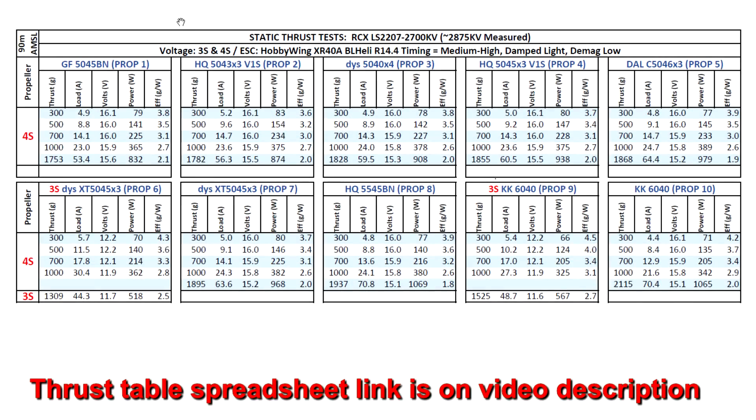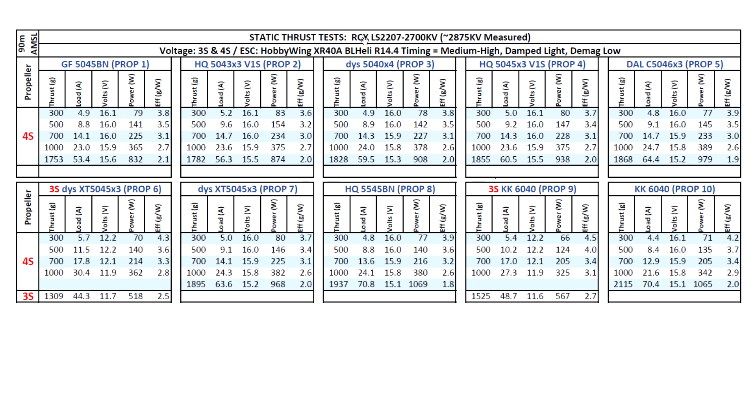Alright, let's look at the thrust test results for the new motor from RCX. This one's the LS 2207 2700 KV. And very much like the motor that is derived from the NK2207, this one also has higher KV than spec. This one came in at 2875 and the NK2207 measured at 2930 if I recall correctly. So based on that KV, I went ahead and tested on 3S and 4S, the usual props, starting with the 5-inch Genfan 5045 BN.